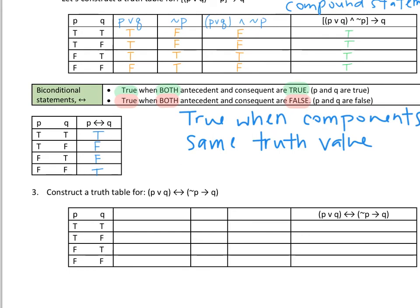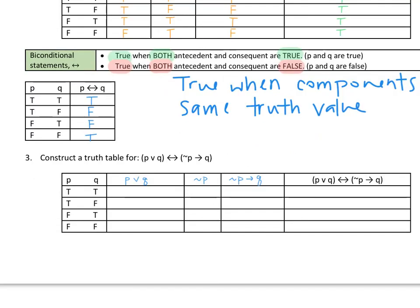Now we're going to construct a truth table for this biconditional: P or Q, if and only if, ¬P implies ¬Q. Not only is it a biconditional, there's also a conditional statement within it. Fill out the three components first — we needed the P or Q column, the ¬P column, and the ¬P implies ¬Q column. In the last column, we'll compare P or Q against ¬P implies ¬Q.